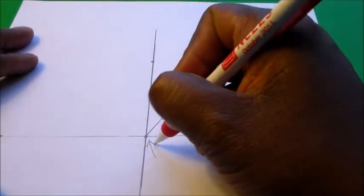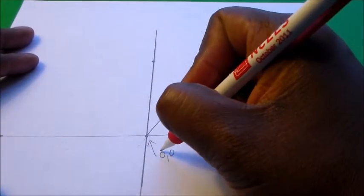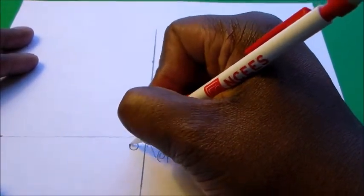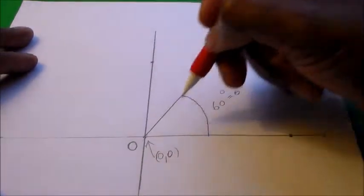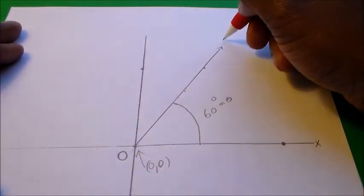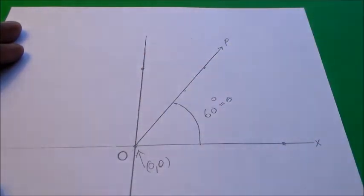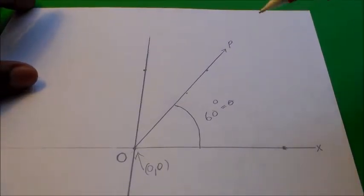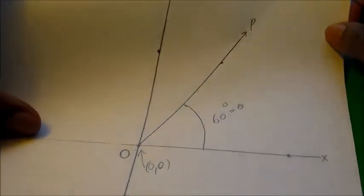Do remember that this point here is our origin — (0, 0) — and that's the origin of the vector. And then the vector goes out to some point P in space. So this is how you would draw a vector.